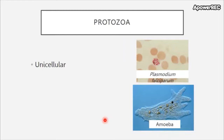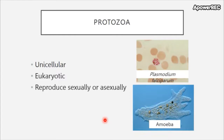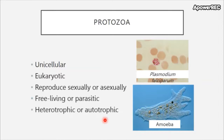Now let's discuss protozoa — we're getting a little bigger here, up to about 30 microns in size. Protozoa are unicellular and eukaryotic. They can reproduce sexually or asexually. They can be free-living, meaning they don't live inside another organism, or they can be parasitic. For example, Plasmodium falciparum is a protozoa that causes malaria. Amoebas are mostly free-living and can be heterotrophic or autotrophic.